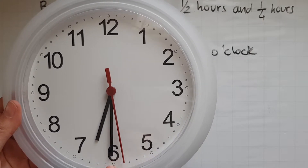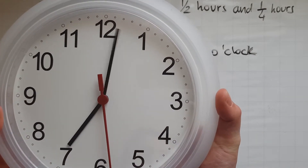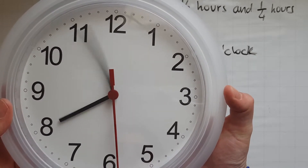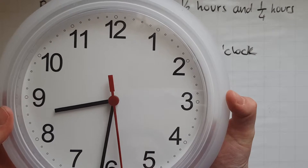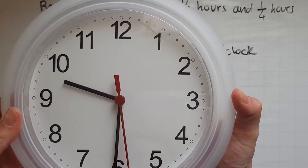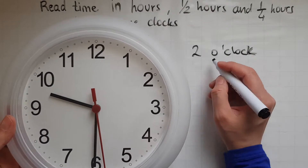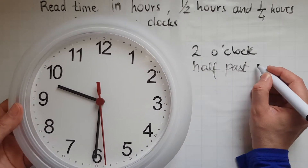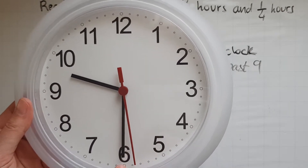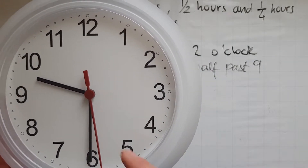So this is half past six, or six thirty. And this is seven o'clock. Now this is seven thirty. And this is eight o'clock. And this is eight thirty. This is nine o'clock. And this is nine thirty. So when you see the minutes hand on the six it means half past — so this is half past nine. It's past nine, half an hour past nine, which is thirty minutes past nine.